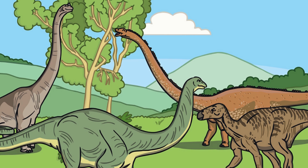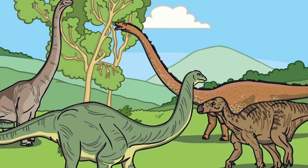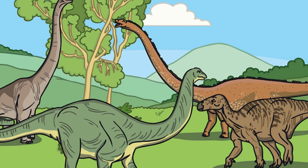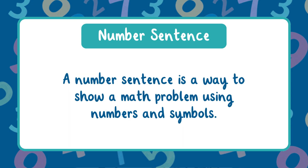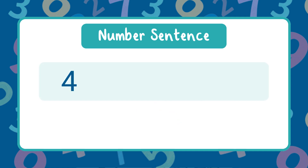There are four dinosaurs playing outside, but what if two more dinosaurs joined them? How many would be playing now? Let's find out by using a number sentence. A number sentence is a way to show a math problem using numbers and symbols. Let's create a number sentence for the dinosaurs. We started with four dinosaurs, and we are adding more.